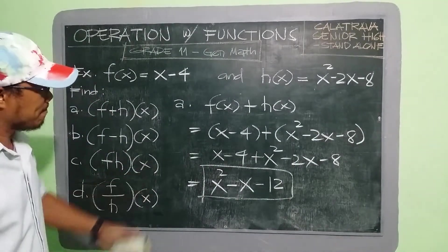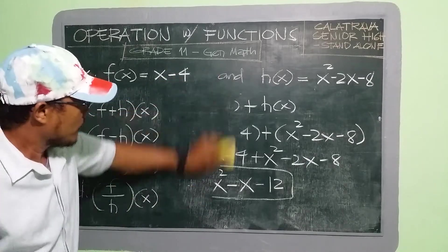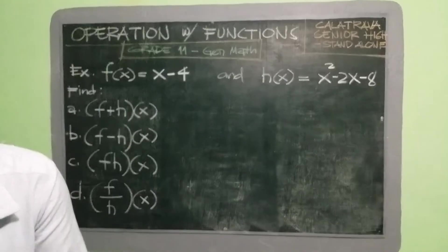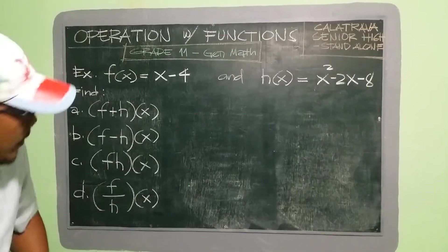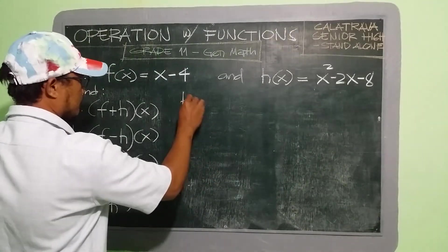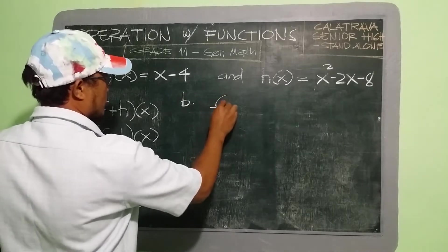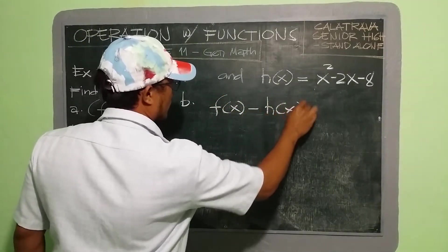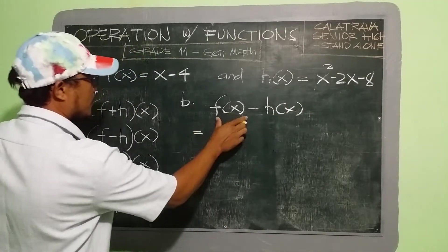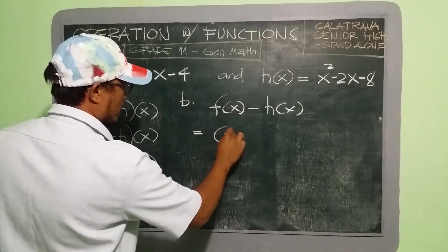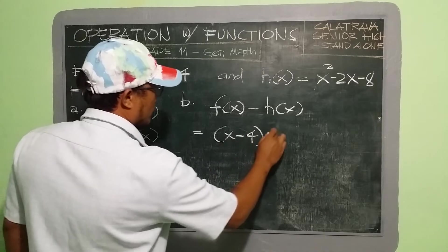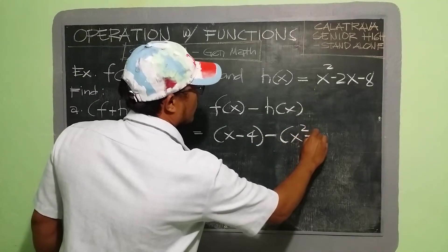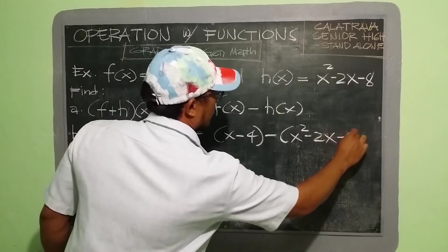Next, letter B — the difference. We have f(x) minus h(x). Copy f(x): x − 4, minus h(x): x² − 2x − 8.